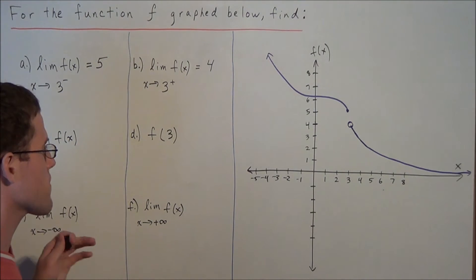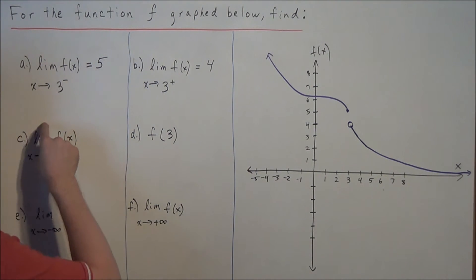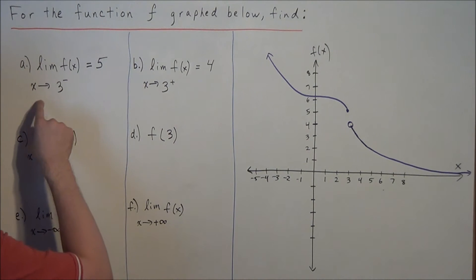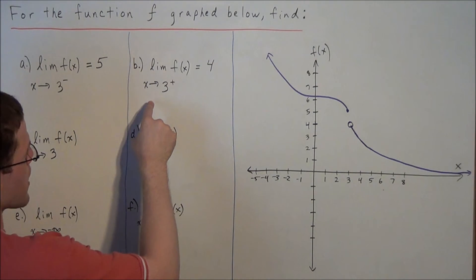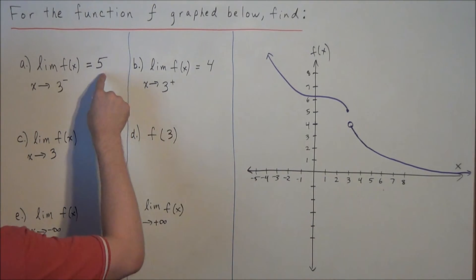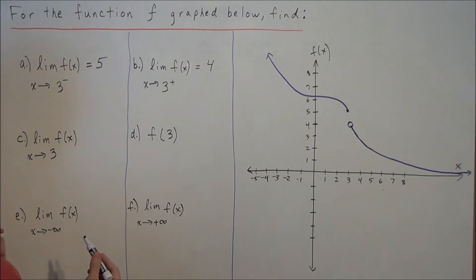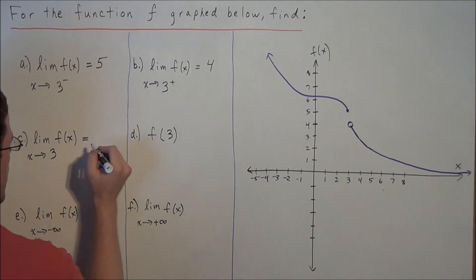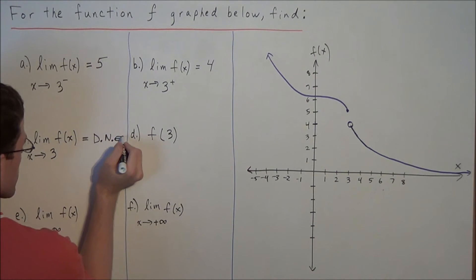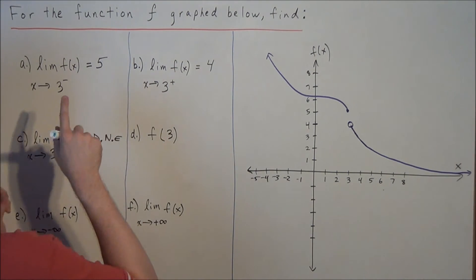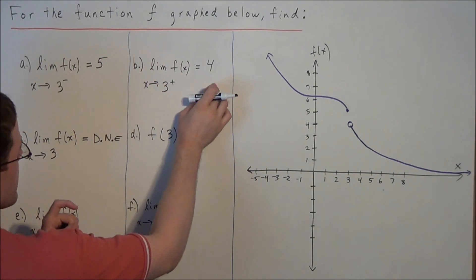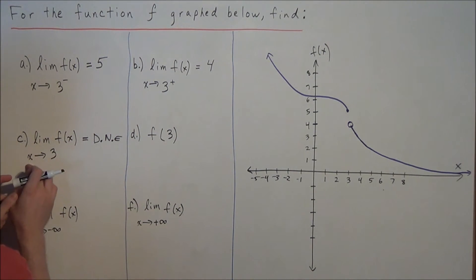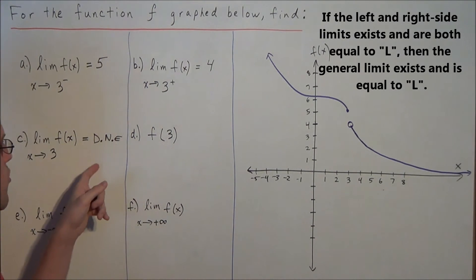For part c, we don't have to do any work with the graph because they're asking what is the limit as x approaches positive 3 of f of x. The limit approaching 3 from the left was equal to 5, and the limit approaching 3 from the right was equal to 4. Since those two limits are not equal, this limit does not exist. If the limit from the left is not equal to the limit from the right as we approach the same point — approaching 3 from both sides — then the limit as x approaches 3 in general does not exist.